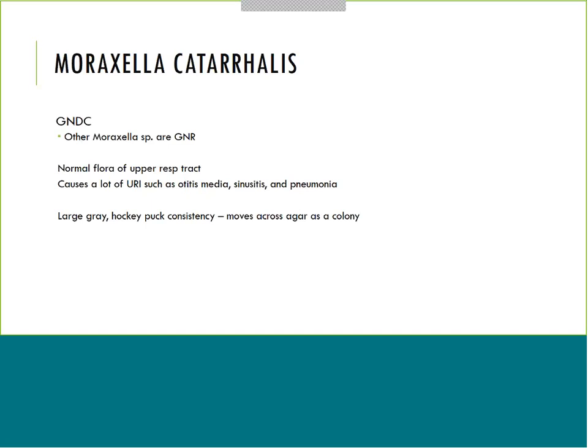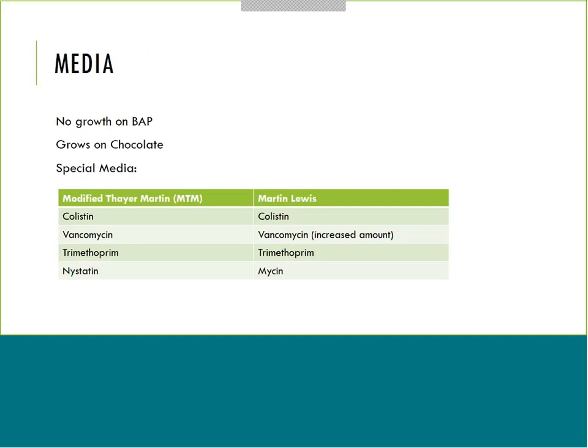Moraxella catarrhalis is unique on agar. It grows as gray colonies, but it has what they call a hockey puck consistency. When you take your loop to pick it up, the colony moves across the agar - just like a hockey puck on ice. You can push the colony across the agar plate, and that is extremely unique to Moraxella catarrhalis.